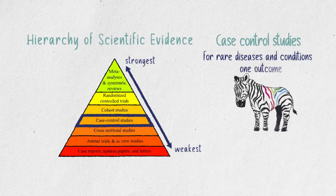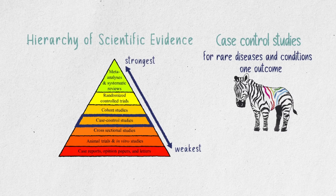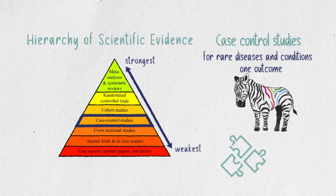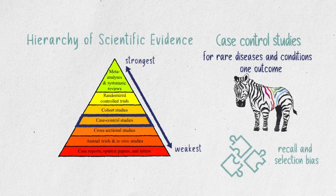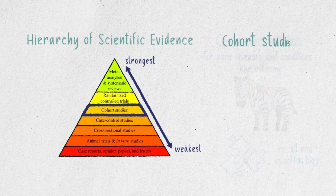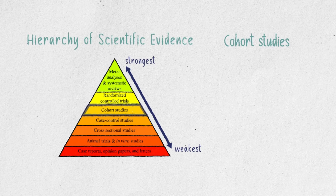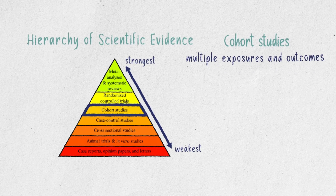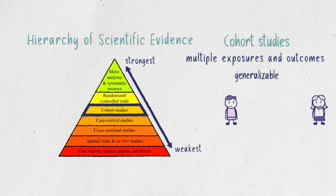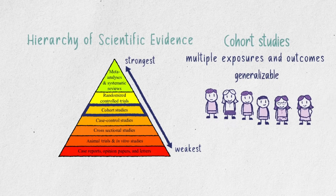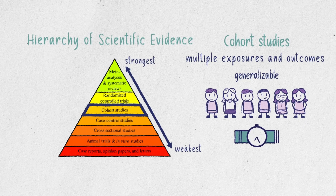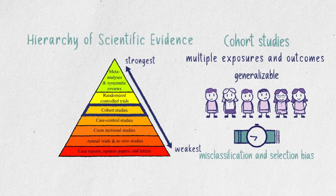However, case control studies study only one outcome, and it can be hard to find a control group that perfectly matches the case groups. They can also be subjected to recall and selection bias, which we'll talk about later. In cohort studies, you may find them suitable for studying multiple exposures and outcomes, and they are highly generalizable, but they require a regular population and may be really time-consuming.